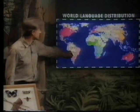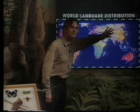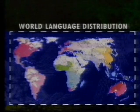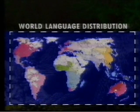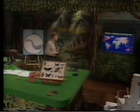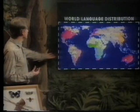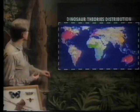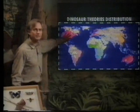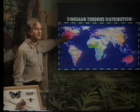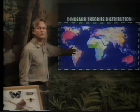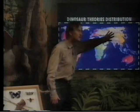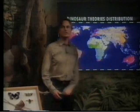Here we have a map of world languages. In this red area, English is spoken. There, Spanish is spoken. There, Russian is spoken. And it's quite natural that you should be able to plot a map like that, that people should speak the language of their country. But what if scientific theories were like that? What if we had a similar map of the distribution of scientific theories? Suppose in the red area, everyone believed the meteor theory of the dinosaur extinction. And in that area, everybody believed the virus theory. And in that area, everybody believed the mammals eating the eggs theory.